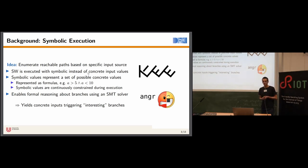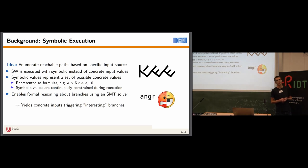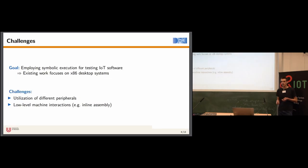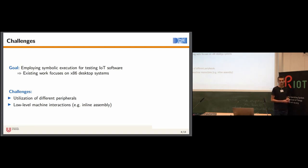Symbolic execution has already gained traction in the academic domain. A popular tool is KLEE, a symbolic execution engine that symbolically executes LLVM IR — the intermediate language used by the LLVM compiler infrastructure. Another tool is angr, a Python framework for software analysis using symbolic execution. However, the majority of existing symbolic execution frameworks focus on the conventional desktop domain, testing Linux applications for example. The goal of our research is to employ symbolic execution for testing IoT software.